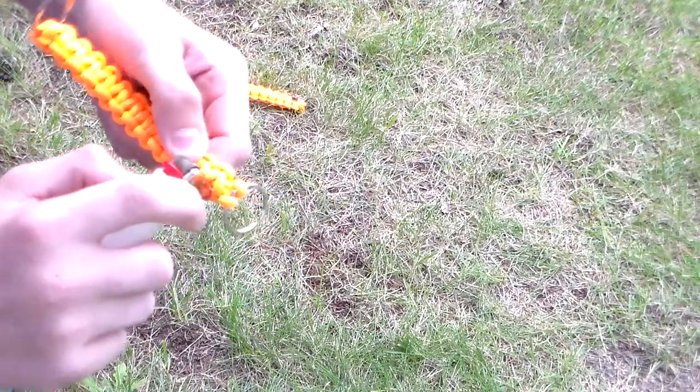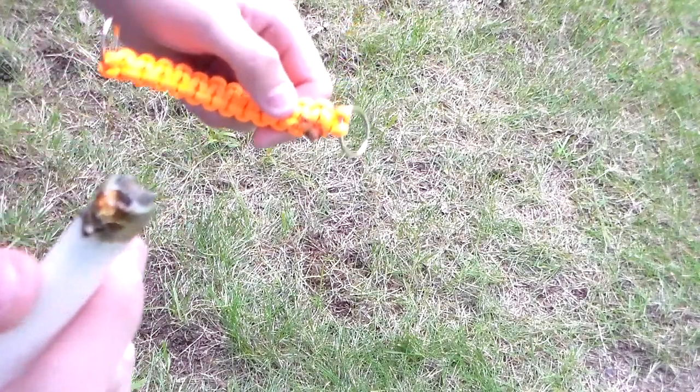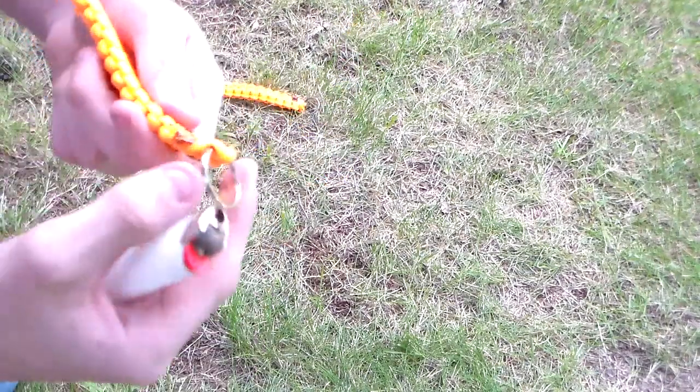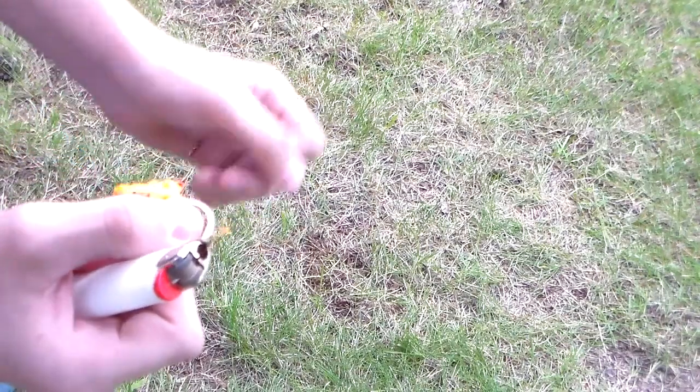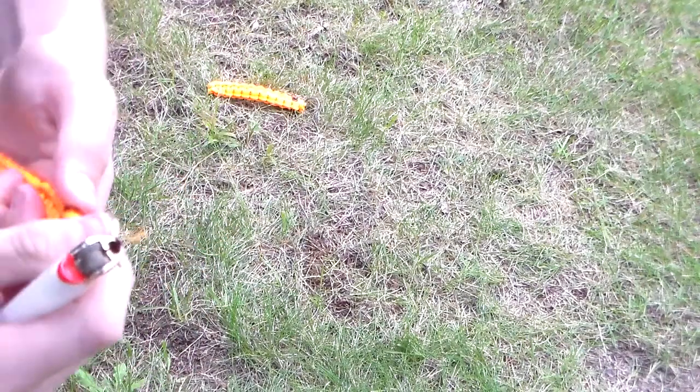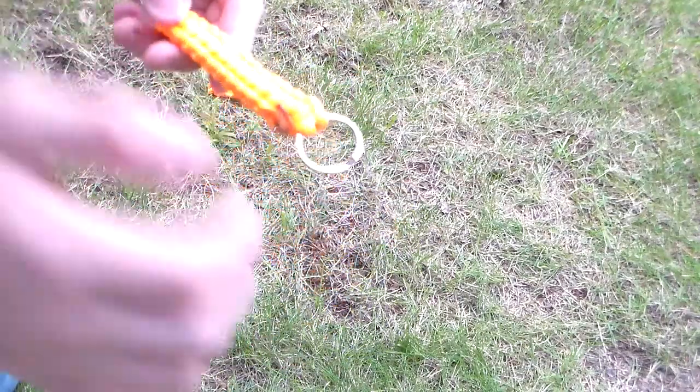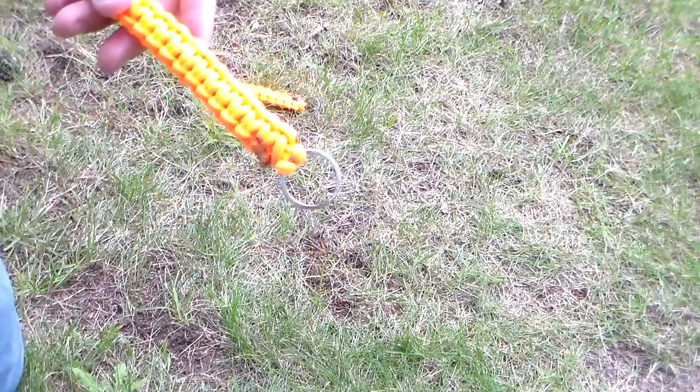So what I do is I use the metal tip right here, the metal tip of the lighter, and I just use it to smush the paracord after it's been melted. So once you have it melted, you are pretty much done. So yeah.